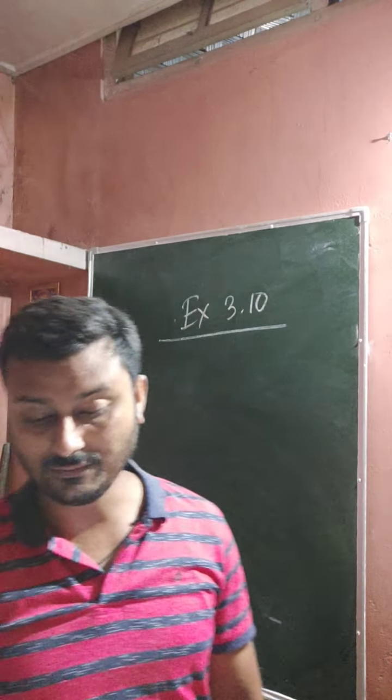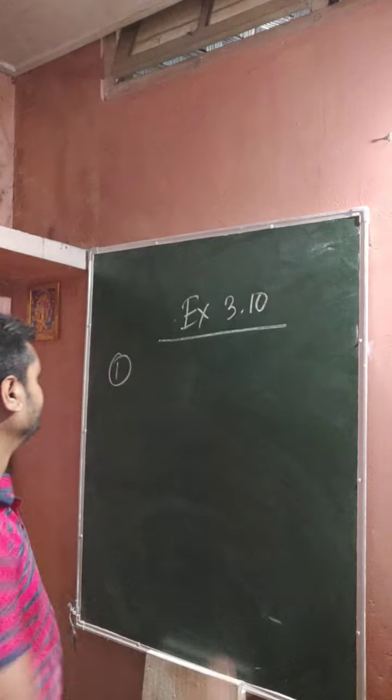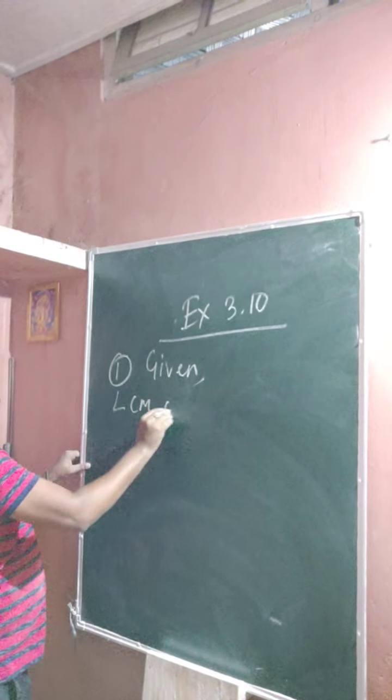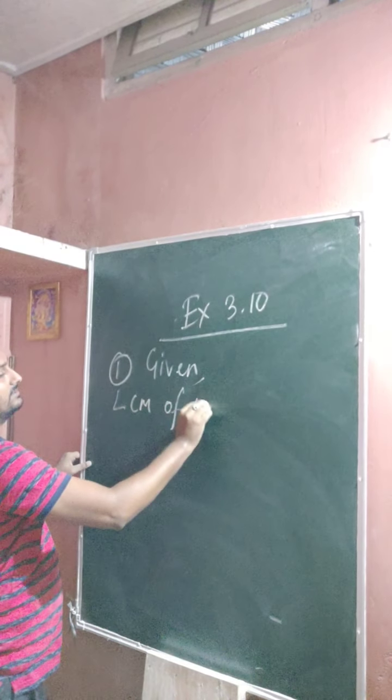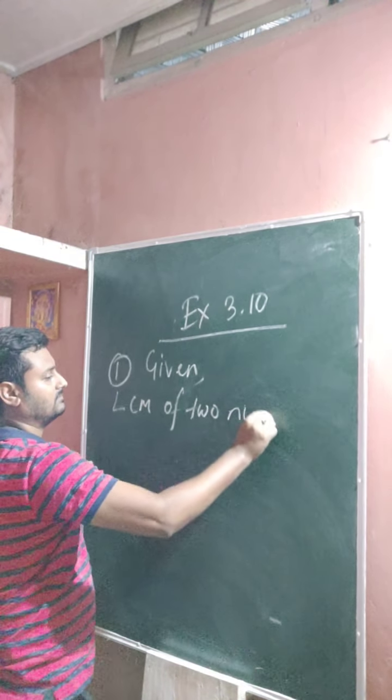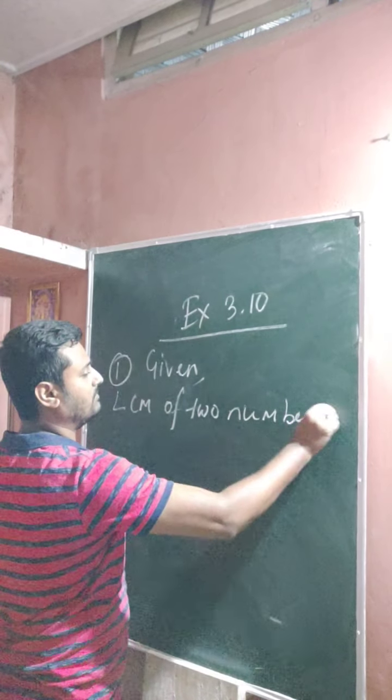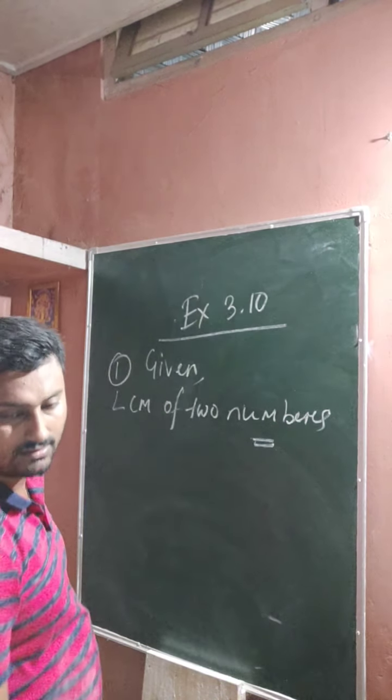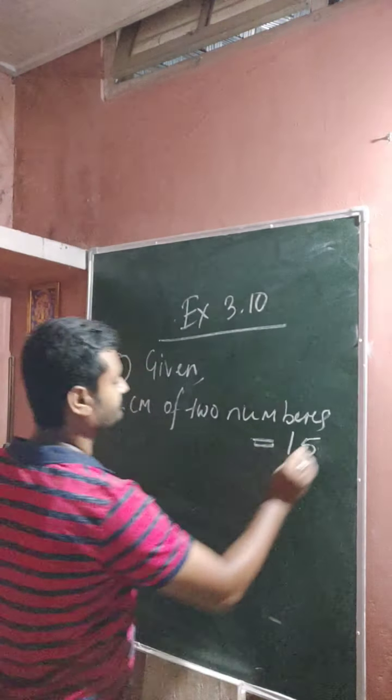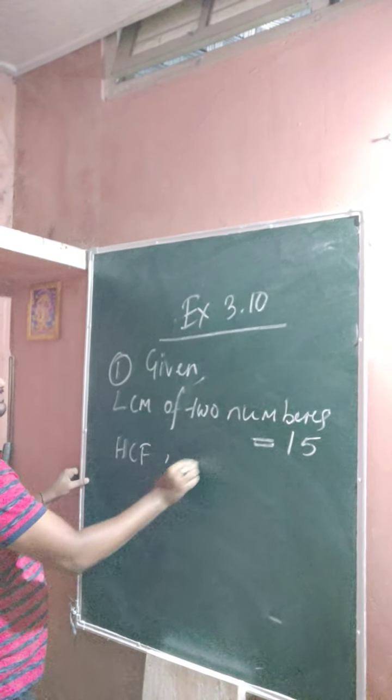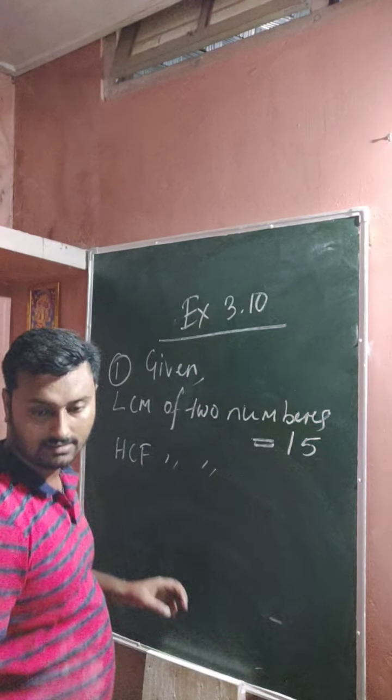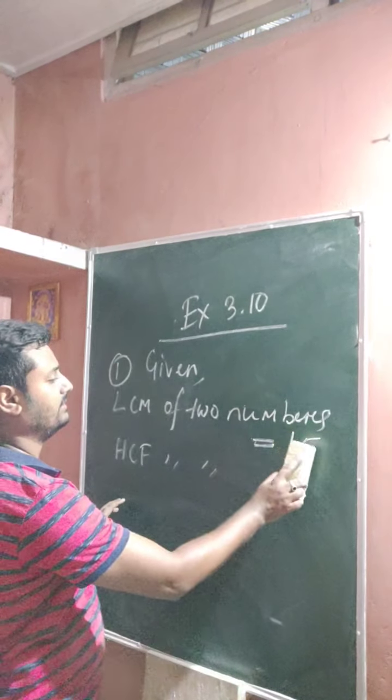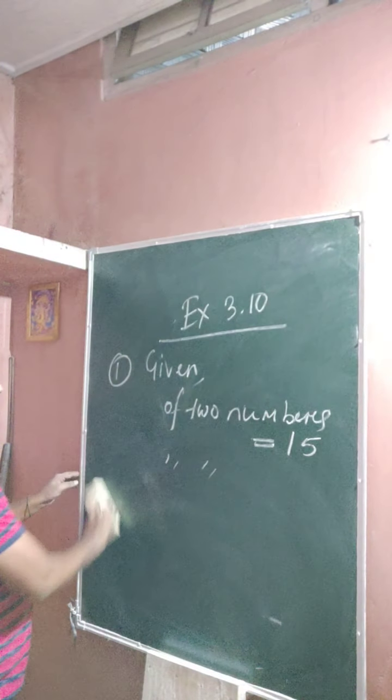So, given, very easy one. Given, LCM of two numbers is 15. Okay, HCF of two numbers. Sorry, HCF is 15, LCM is 450.